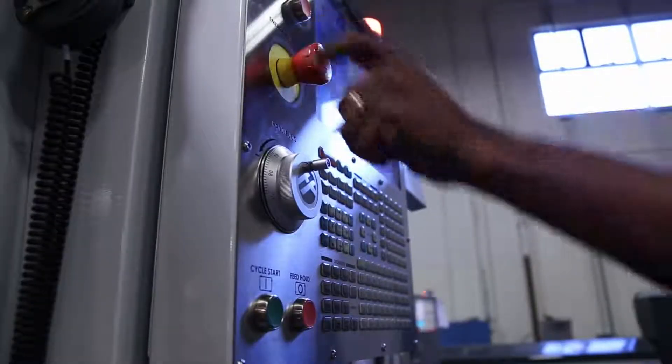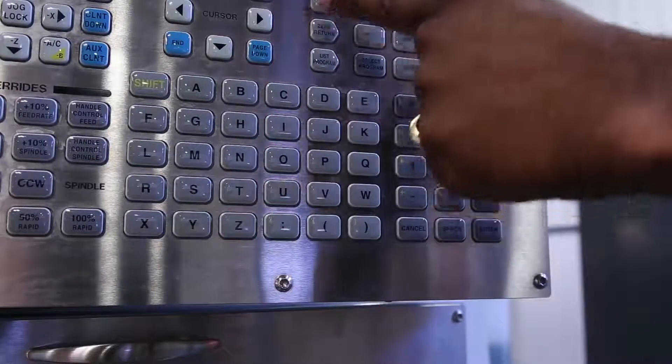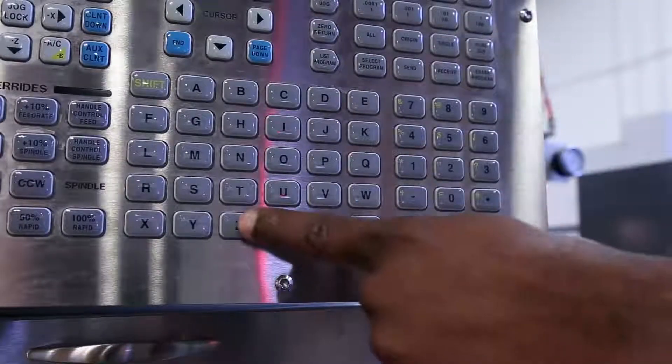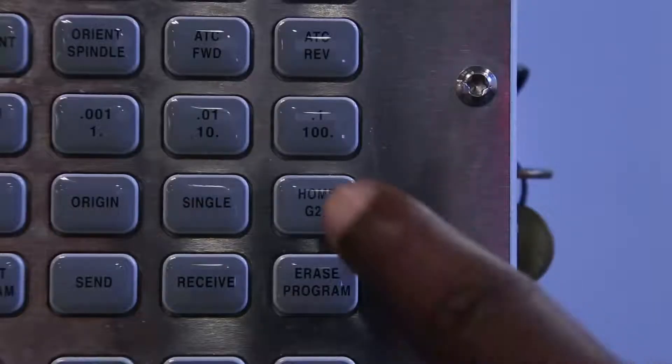Release the E stop and press reset a couple of times to clear the alarm. Zero return only the Z axis, then press Z, home G28. The Z axis will now move to the tool change height.